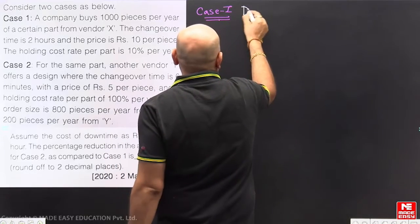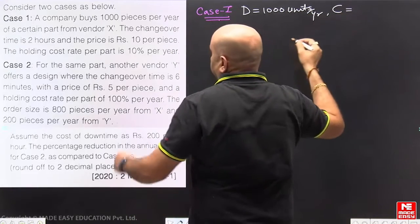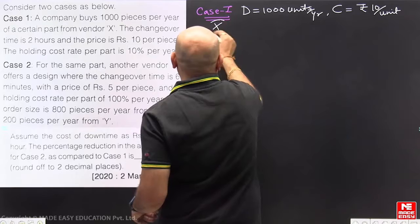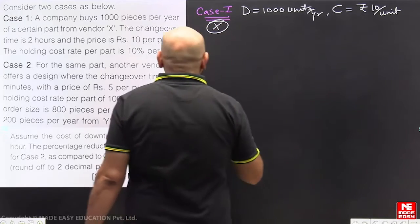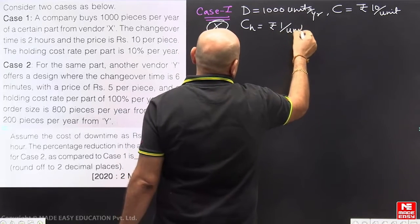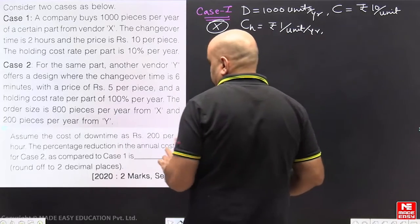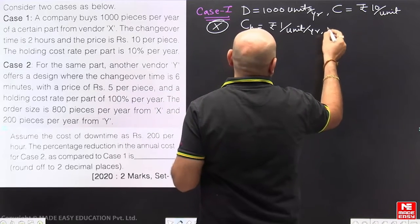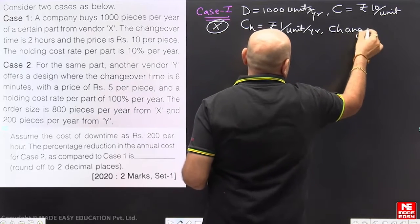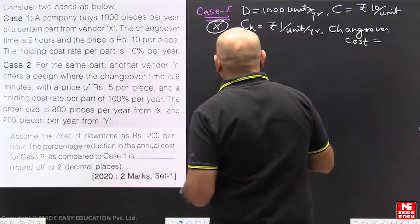Demand, annual demand is given - capital D is 1000 units per year. Purchasing cost is given Rs. 10 per unit. This is for vendor X. Holding rate is given 10%, so 10% of 10 is Rs. 1 per unit per year. Now see setup cost - that is Rs. 200 per hour. It requires 2 hours, so setup cost will be, or changeover cost, Rs. 2 into 200 will be Rs. 400.